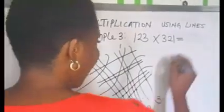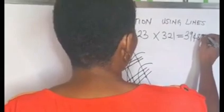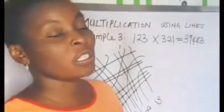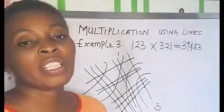So, our answer will be three, nine, four, eight, and three. When you multiply 123 by 321.